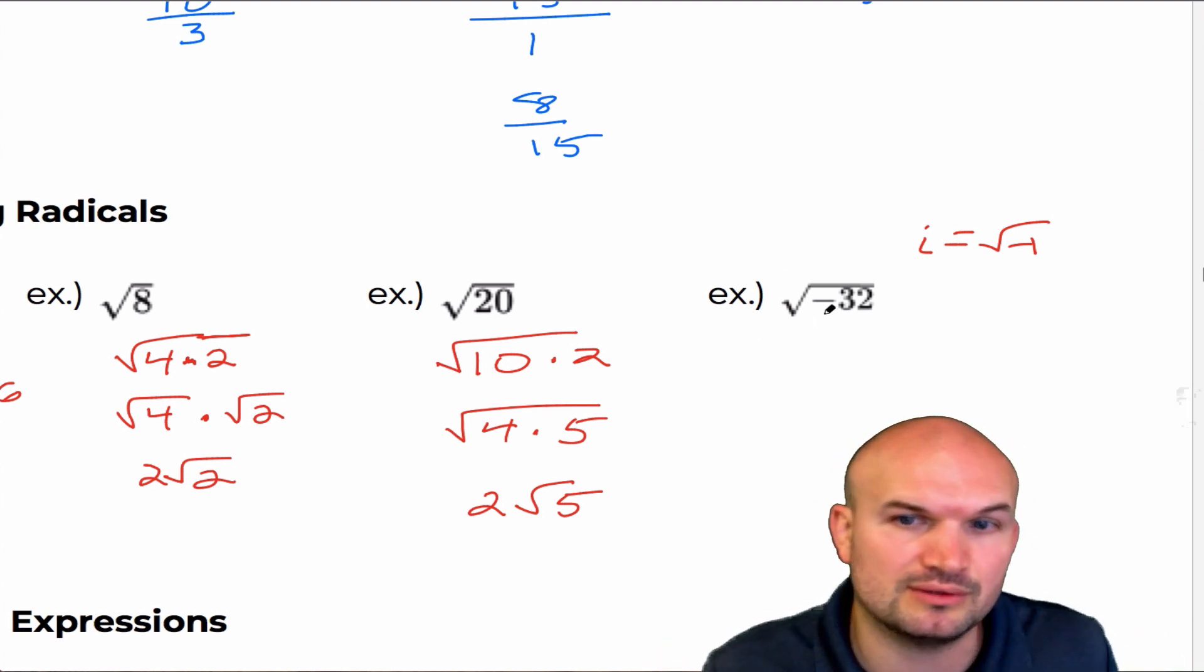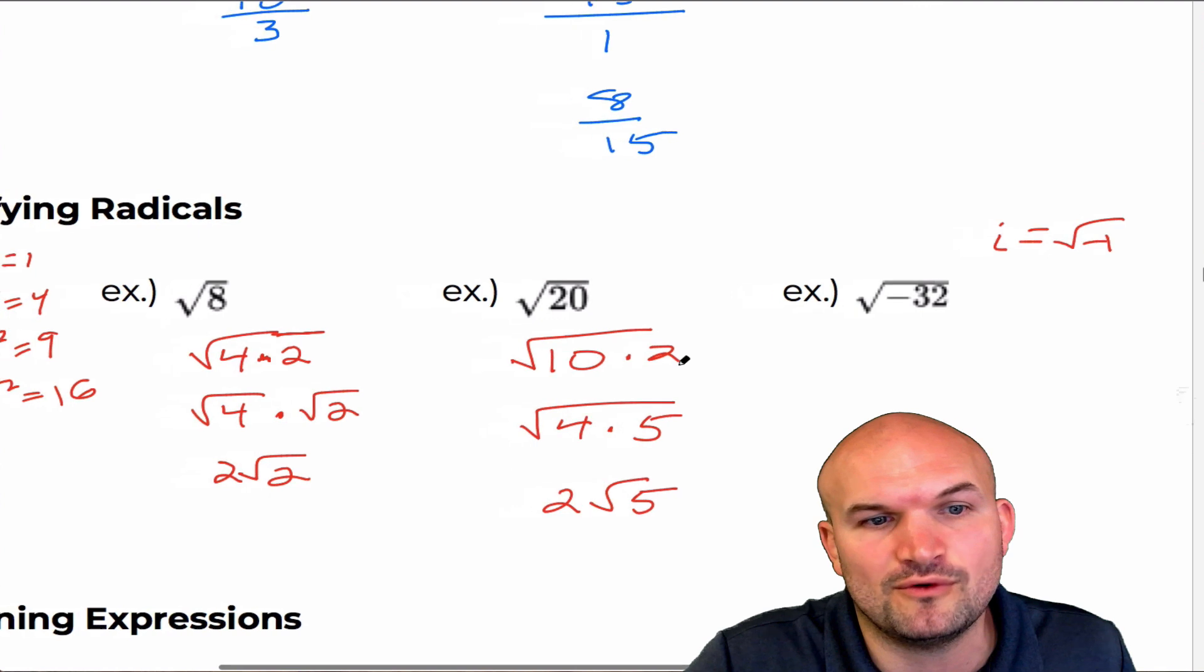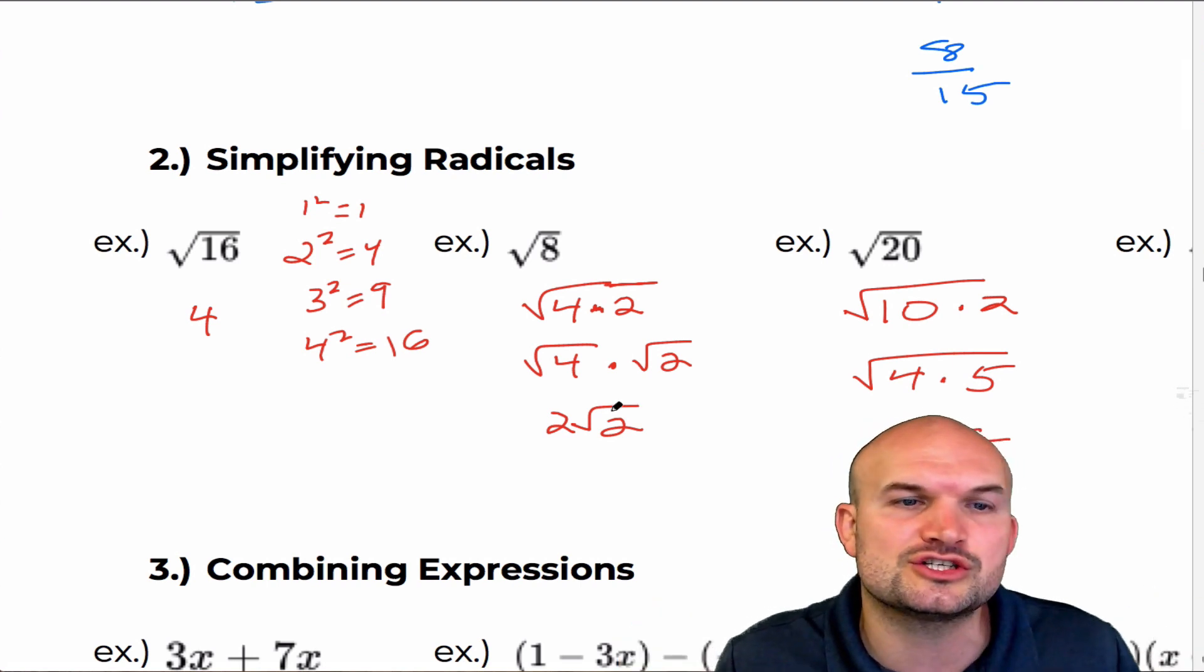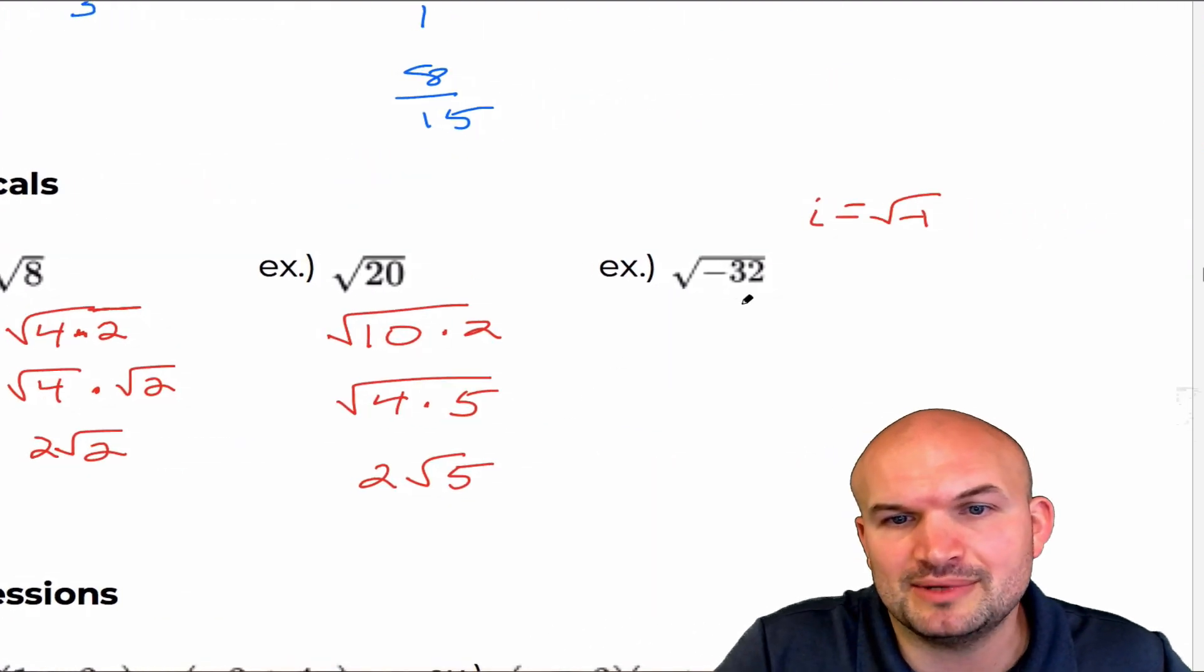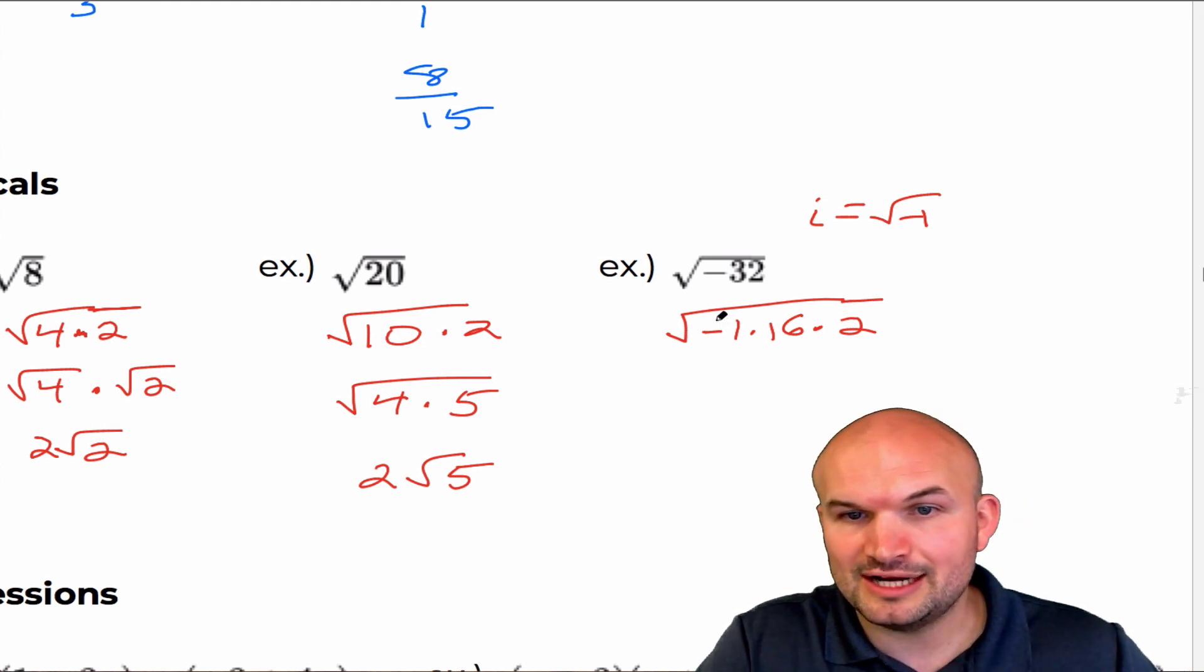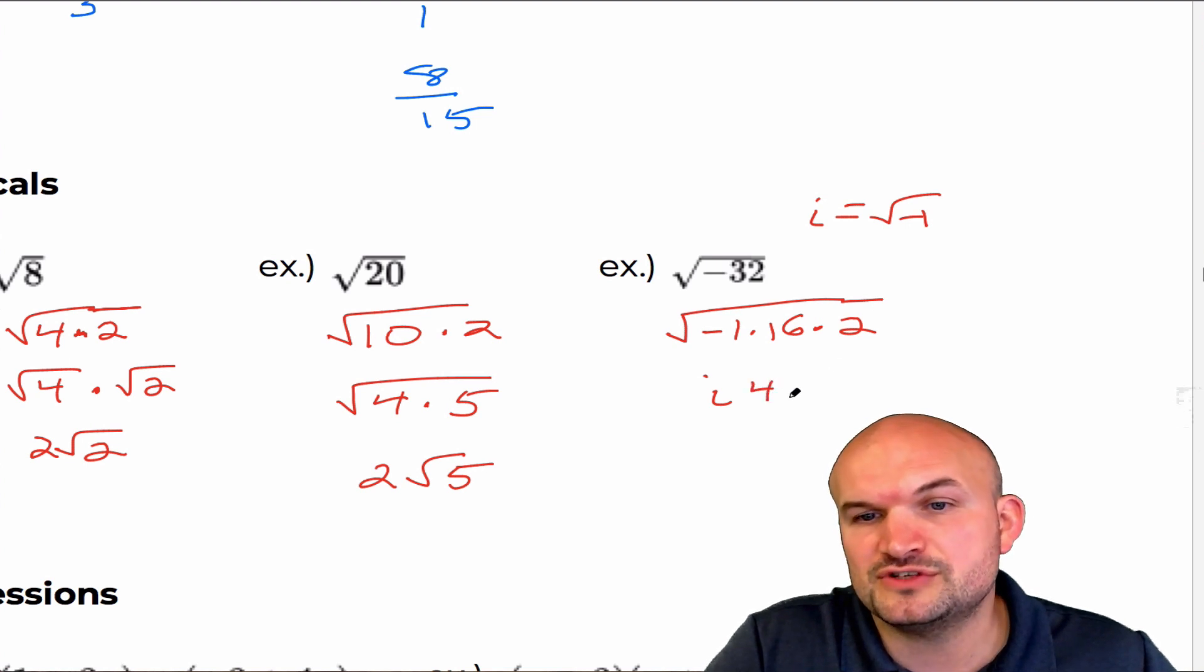Well, you could do four and eight, right? But then see the problem with using four and eight is you could do four, which is square root of two, but then you're going to have eight, which you're going to have to break down again. So your idea is what is the largest square number that I can divide into 32? And that answer is 16. So what I'm going to do is I'm going to break this up into negative one times 16 times two. Now I know that the square root of negative one is i, square root of 16 is four. And then the square root of two is, we can't take the square root of two, so we can just leave it just like that.